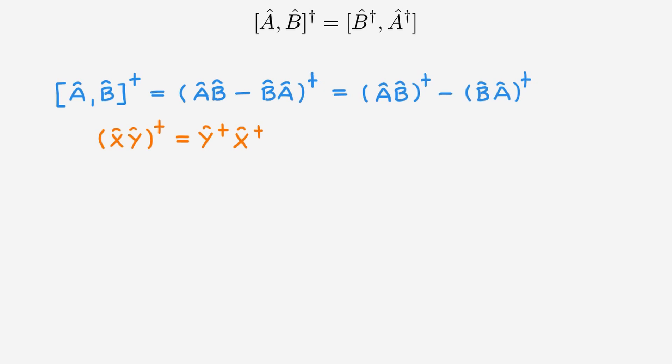If you can't remember this property we actually proved it in our video on adjoint operators so you can just follow the link in the description. But using it here we can write the first term as B dagger A dagger and the second term as minus A dagger B dagger. Putting this together we get the commutator of B dagger with A dagger and this completes the proof.